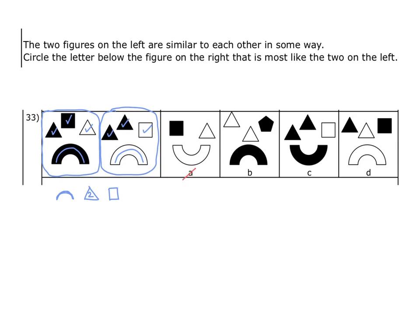Option B has the correct orientation of the semicircle and it has two triangles, but instead of the square, it has this pentagon. So option B is incorrect as well.